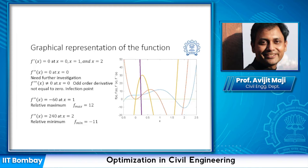First, let us investigate x = 0. The second order derivative f''(x) at x = 0 is zero, so we cannot decide anything at this point. We need to look into the third order derivative, which is non-zero at x = 0. Unfortunately, the order n is 3, which is odd. As indicated in the sufficient condition, we can obtain minimum or maximum only when the derivative order is even, so this represents an inflection point.